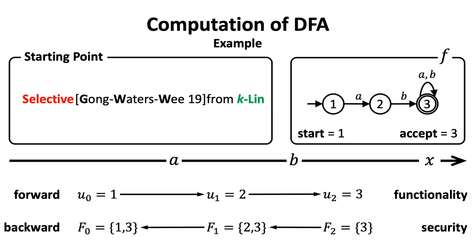Observe that the forward computation always hits one state at each step, while the backward computation hits a set of states at each step.